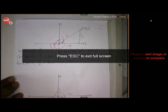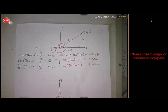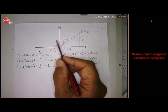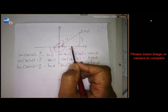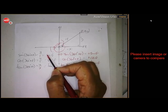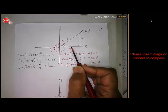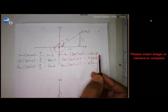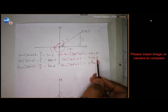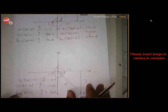Now we look at 360 plus theta — back in the first quadrant — and 360 minus theta in the fourth quadrant. For 360 plus theta: one full revolution brings us to the first quadrant, so x, y, and r are all positive. Therefore sin(360 + θ) = +sin(θ), cos(360 + θ) = +cos(θ), and tan(360 + θ) = +tan(θ). All three are positive because it's in the first quadrant.